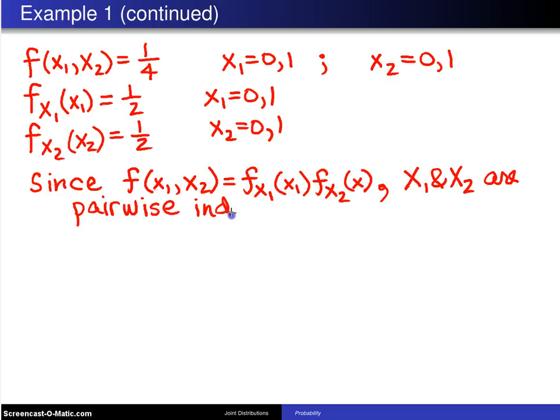Now that same line of reasoning could have been executed on X1 and X3 and on X2 and X3, and it turns out all three of those variables are pairwise independent. So the next question here is whether or not these variables are mutually independent.